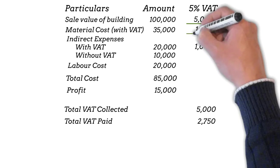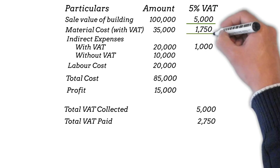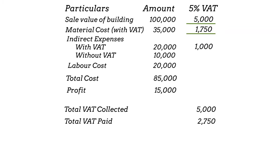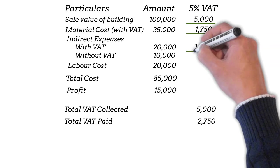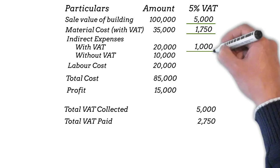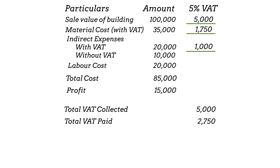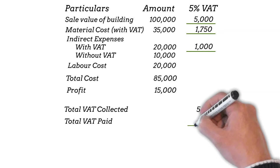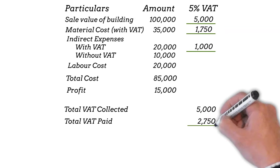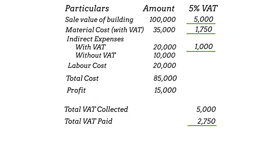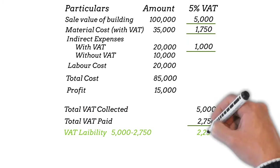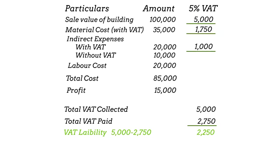The VAT paid is 5% of material cost 35,000 and 5% of 20,000 indirect expense, which comes to 2,750. So the VAT liability is 5,000 minus 2,750, that is 2,250.